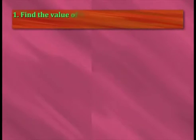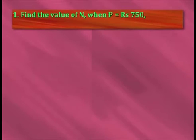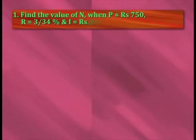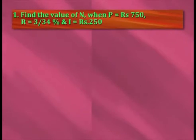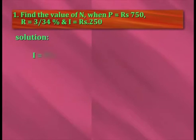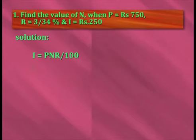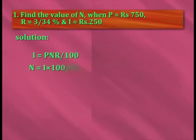Find the value of n when p is equal to rupees 750, r is equal to 3¾ percent, and i is equal to rupees 250. Solution: i is equal to p·n·r by 100, therefore n is equal to i into 100 by p·r.